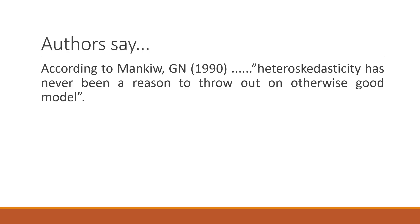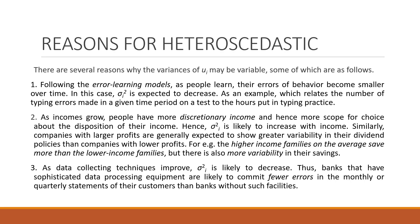According to Mankow, heteroscedasticity has never been a good reason to throw out an otherwise good model. What can be the reasons for heteroscedasticity? One reason is the error learning model — the errors of behavior become smaller over time. For example, when you started typing on a keyboard for the first time, you made many typographic errors. Over time, you improved and the errors decreased. Similarly, when you started driving a car for the first time, you committed many errors, but over time they decreased — this is a reason for the presence of heteroscedasticity.